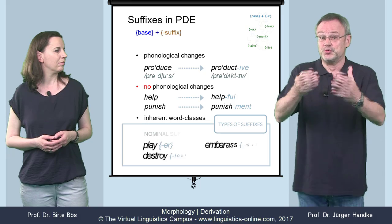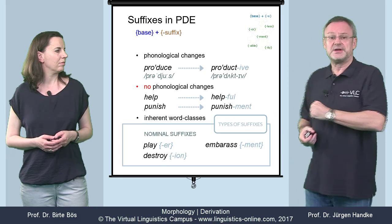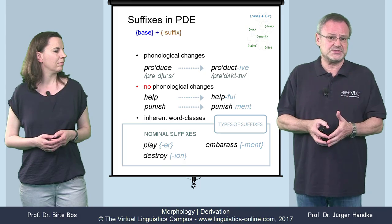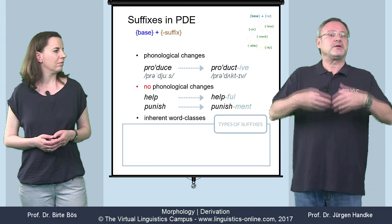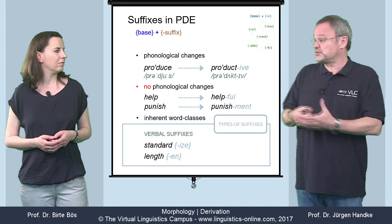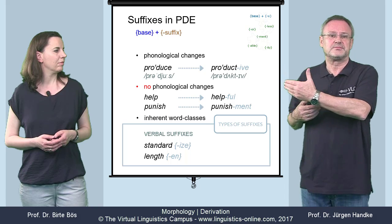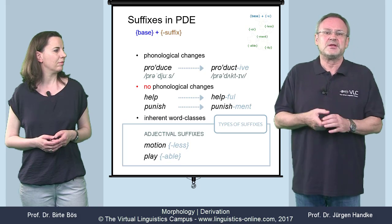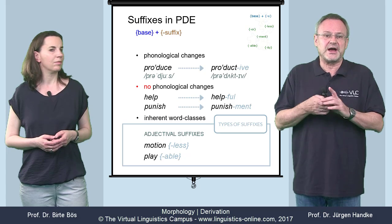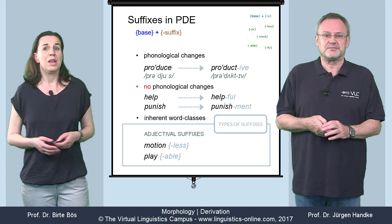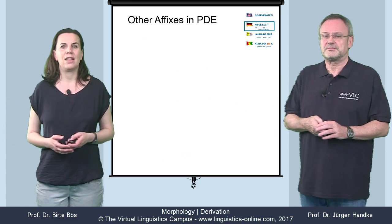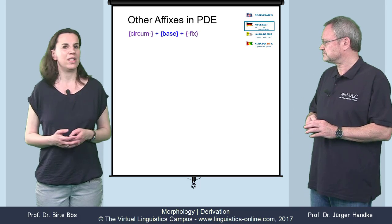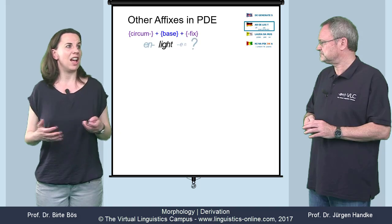Furthermore, we can always associate an inherent word class with suffixes. There are nominal suffixes — that is, suffixes that turn base forms into nouns. There are verbal suffixes that result in verbs. And adjectival suffixes, which turn base forms into adjectives.